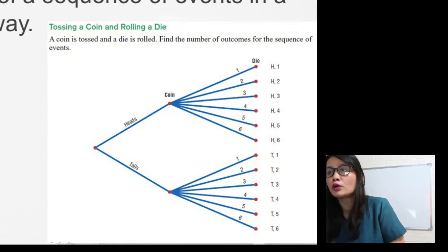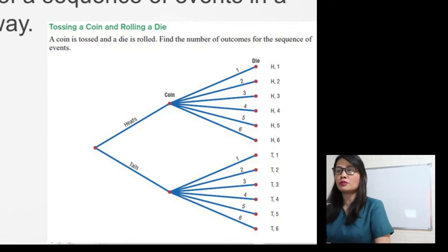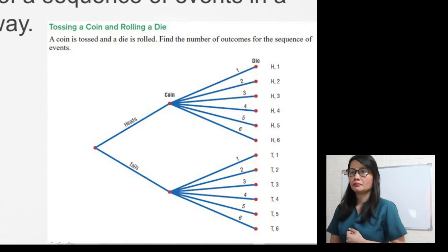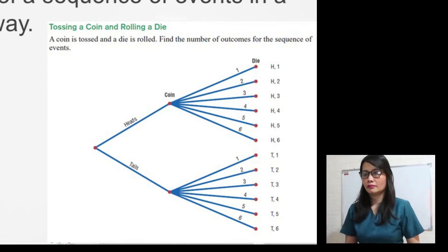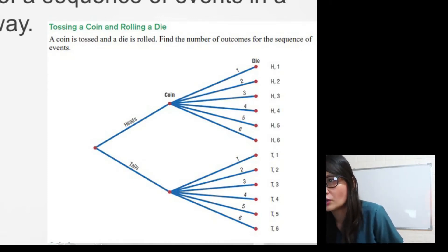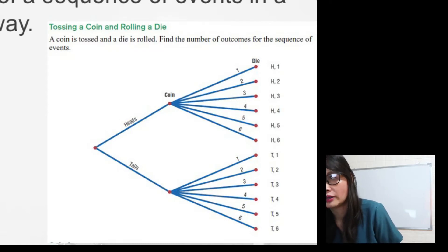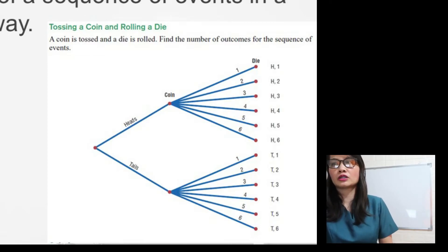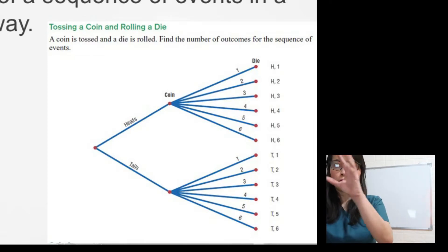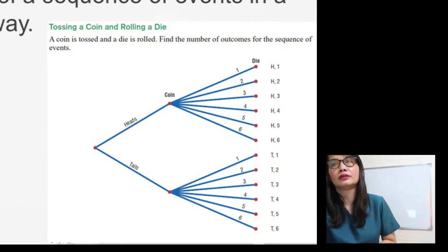So how many outcomes from the sequence of events? You just count. So we have 12 outcomes — there are 12 possible outcomes in total.